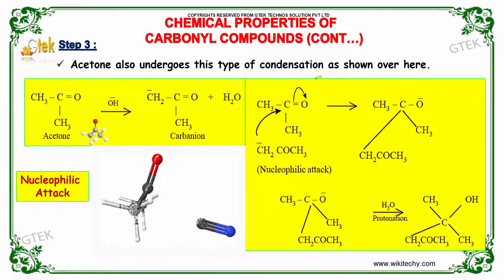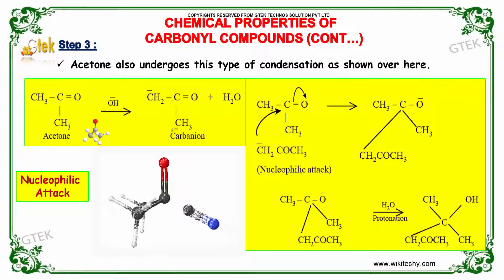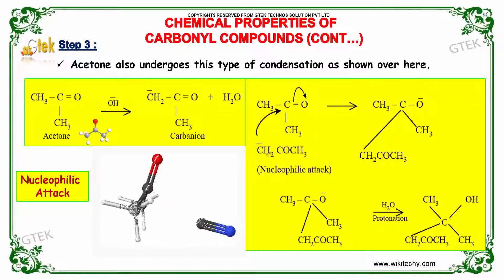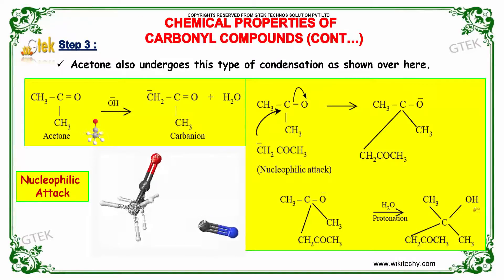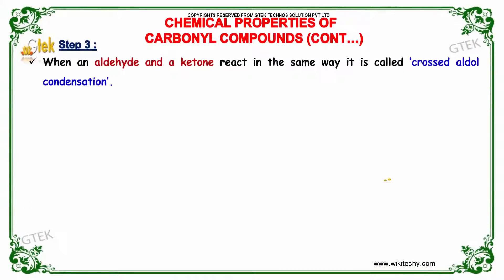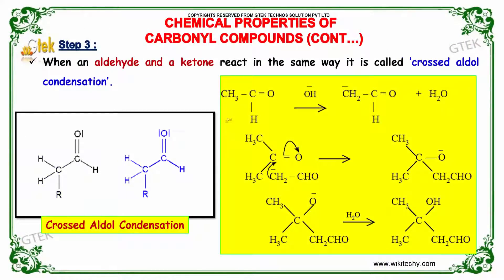Acetone also undergoes this type of condensation. When acetone is made to react with OH⁻ it produces the carbanion along with water. This carbanion reacts with another molecule of acetone via nucleophilic attack to produce an intermediate, which upon protonation gives the product: CH₂COCH₃·CCH₂OH. When an aldehyde and a ketone react in the same way, it is called cross aldol condensation.